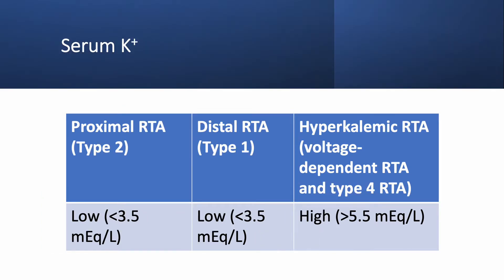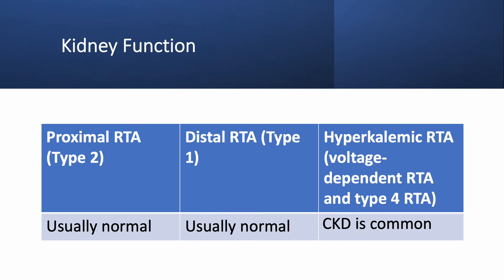What about potassium? Proximal and distal RTAs, by definition, have low potassium, while hyperkalemic RTA — as the name suggests — will have hyperkalemia. Regarding kidney function, it is usually normal in proximal and distal RTAs, but in type 4 RTA in particular, chronic kidney disease is common.